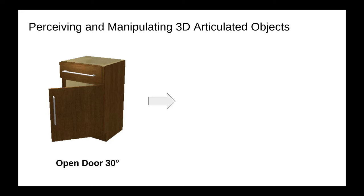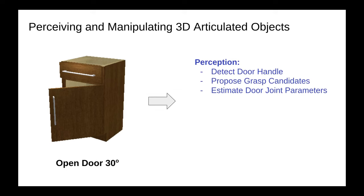You may think of the following intuitive solution. For perception, we can train state-of-the-art neural networks to detect a door handle, propose grasp candidates, and estimate door joint parameters. Then, you employ motion planning and your favorite controller to grasp the handle and execute a trajectory to pull the door open.